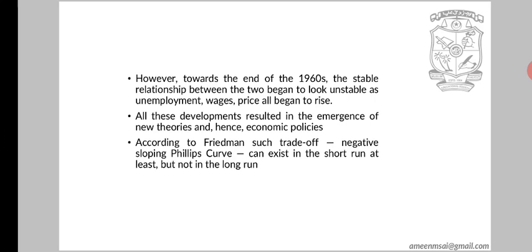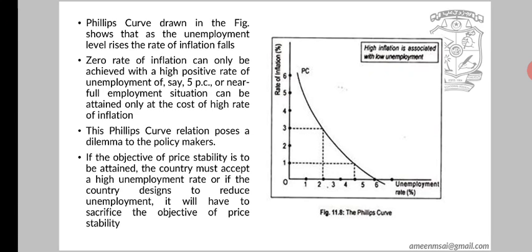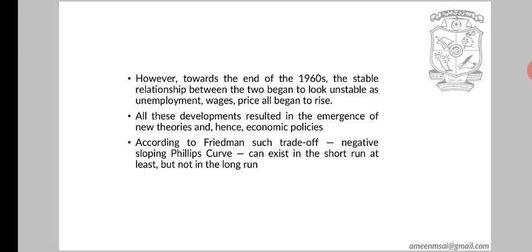According to Friedman, such a trade-off — a negatively sloping Phillips curve — can exist in the short run at least, but not in the long run. Thank you, see you in the next class.